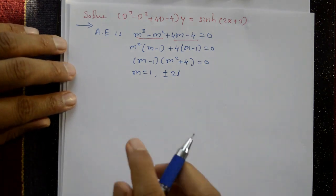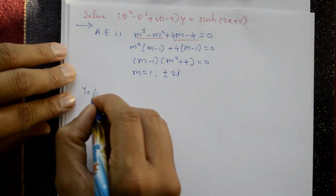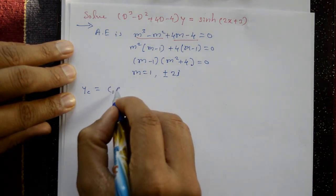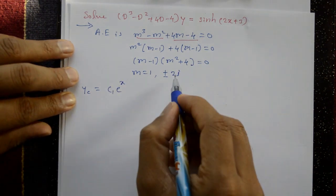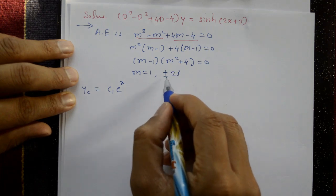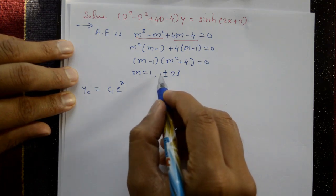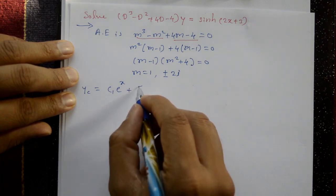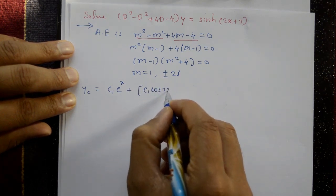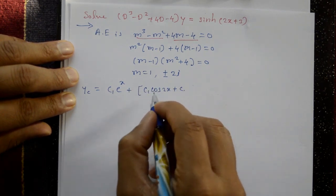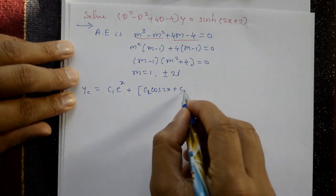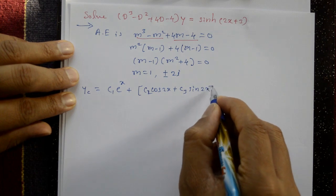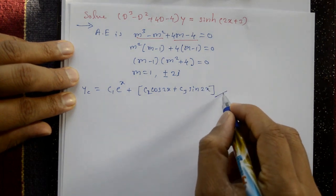The complementary function is: yc = c₁e^x (real root m=1) plus, for the complex roots with α=0, β=2: c₂cos(2x) + c₃sin(2x).